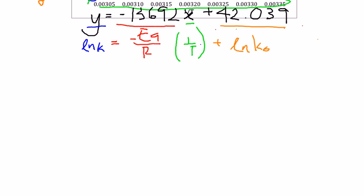Therefore, we can first find out our frequency factor, which is ln K0. Our K0 is equivalent to 42.039. And, if we multiply by the exponential on both sides,